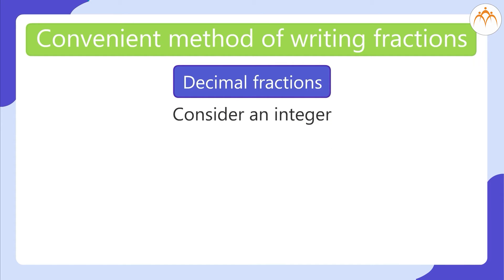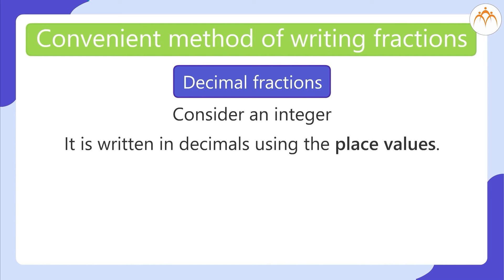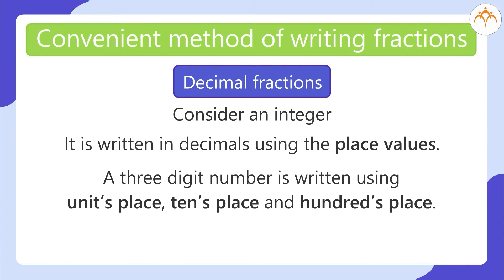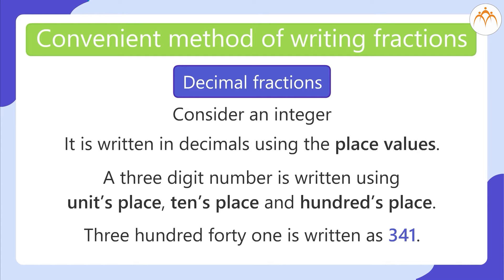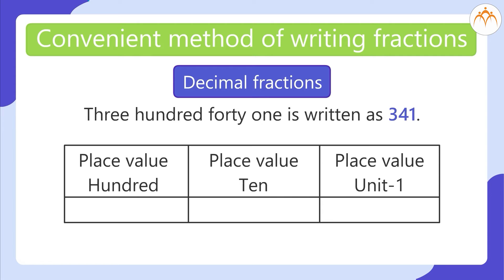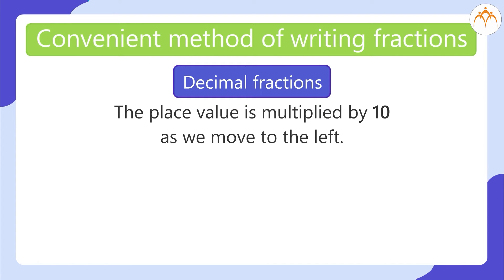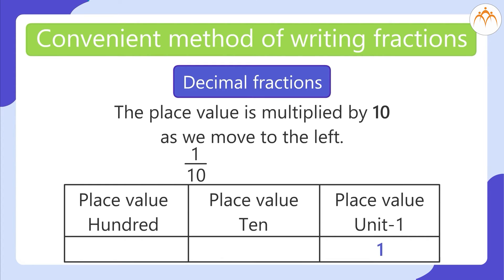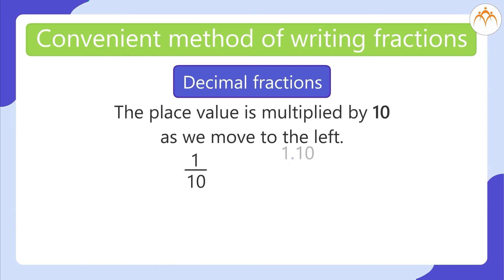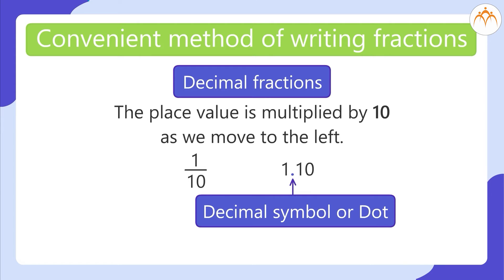Consider an integer. It is written in decimals using place values. A 3-digit number is written using units place, tens place and hundreds place. So 341 is written with place value 100 for 3, place value 10 for 4, and place value 1 for 1. The place value is multiplied by 10 as we move to the left. If we want to write 1 by 10, we can write it to the right of the units place digit. However, it is necessary to put a dot called the decimal symbol.